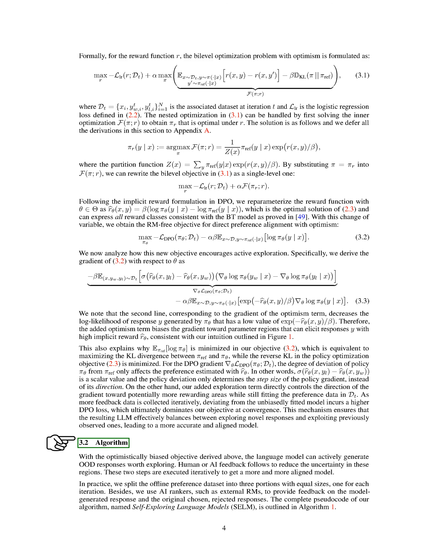We present our algorithm, self-exploring language models, SELM. With the optimistically biased objective we derived earlier, our language model can actively generate out-of-distribution, OOD, responses that are worth exploring. We then incorporate human or AI feedback to reduce uncertainty in these regions. These two steps are carried out iteratively to align the model more closely with the desired outcomes. In practice, we divide the offline preference dataset into three equal parts, one for each iteration.